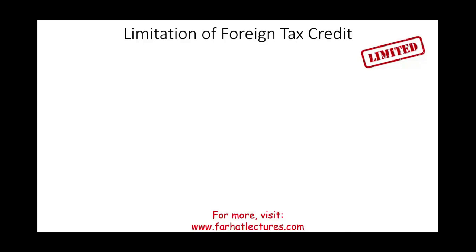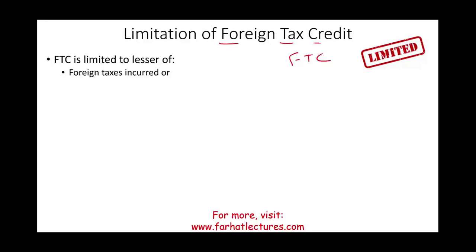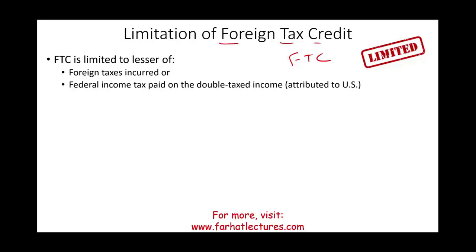Let's talk about the limitation of the foreign tax credit. The FTC is the lesser of: the foreign taxes incurred — whatever you paid — or the federal income tax paid on the double-taxed income. It's the lesser of what you paid in the foreign country, or how much you would have paid on that money in the US, so that you're not subject to double taxation. We will work a few examples.